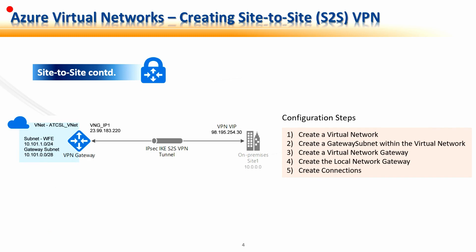It is time to get started with our demo. Before we begin, let's understand the steps for configuring Site-to-Site VPN. We already have a resource group configured. As the first step, we will configure a virtual network named atcsl-vnet. During configuration, a default subnet is created — we have named it WFE with the IP address range 10.101.1.0. Once the virtual network is created, we will go back to subnets and create a gateway subnet with the address range 10.101.0.0. This gateway subnet is required for the creation of any VPN gateway.